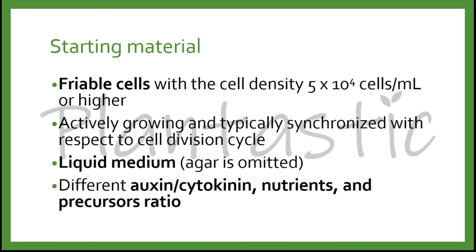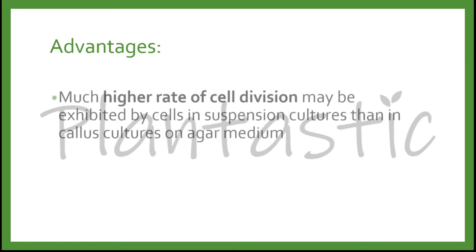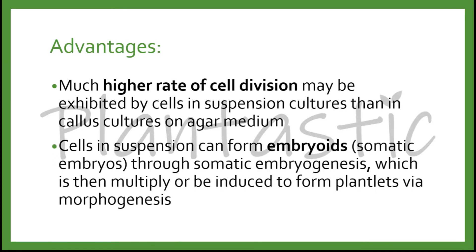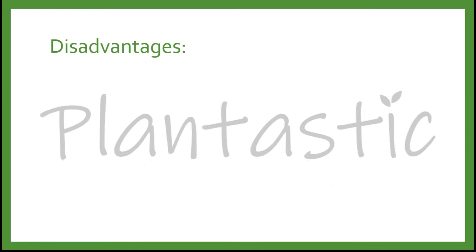We need to add different plant growth regulators such as auxin or cytokinin, nutrients, and precursor ratio. The advantages of suspension culture are: it gives a much higher rate of cell division than may be exhibited by cells in callus culture on agar medium, meaning the cell division rate in liquid culture is much higher than in agar medium. The cells in suspension culture can form embryos known as somatic embryos through somatic embryogenesis, which are then multiplied or induced into plantlets via morphogenesis.